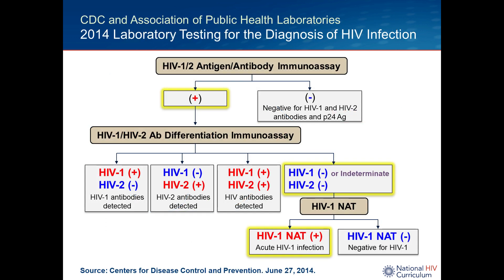We now use the standard CDC Association of Public Health Laboratories algorithm for routine HIV testing. With someone with acute HIV, the initial antigen-antibody screening test is typically positive. But when you proceed to the HIV-1/2 differentiation immunoassay — which is just an antibody test with IgM and IgG, and no P24 detection — that test usually is negative. The algorithm then directs you to do a nucleic acid test, typically an HIV RNA level, which should be positive. So the classic pattern with acute HIV using this algorithm is: positive screening test, negative differentiation assay, positive viral load test.